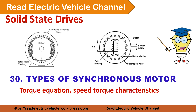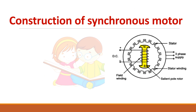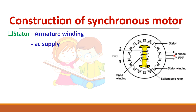In this video we are going to see about the different types of synchronous motor. Like any other machine, this synchronous motor also has a stator and rotor. The stator carries the armature winding, and we have to give a three-phase AC supply to the stator. When this three-phase AC supply is given to the armature winding, it will produce a rotating magnetic field.